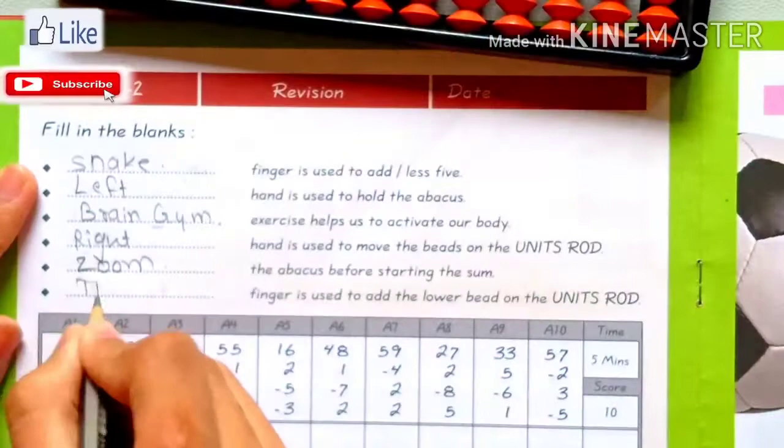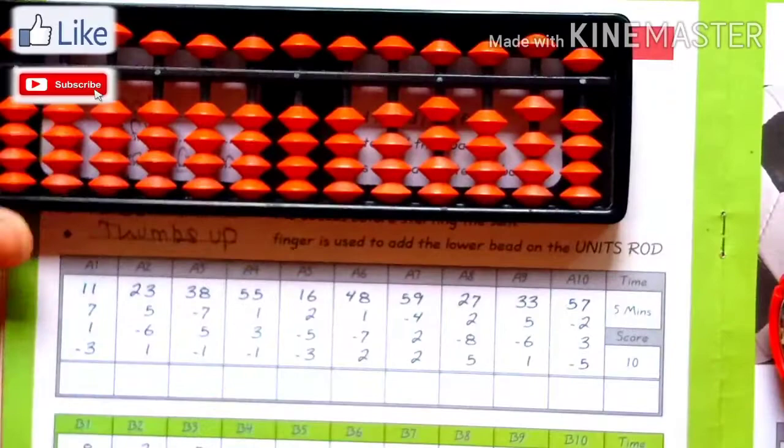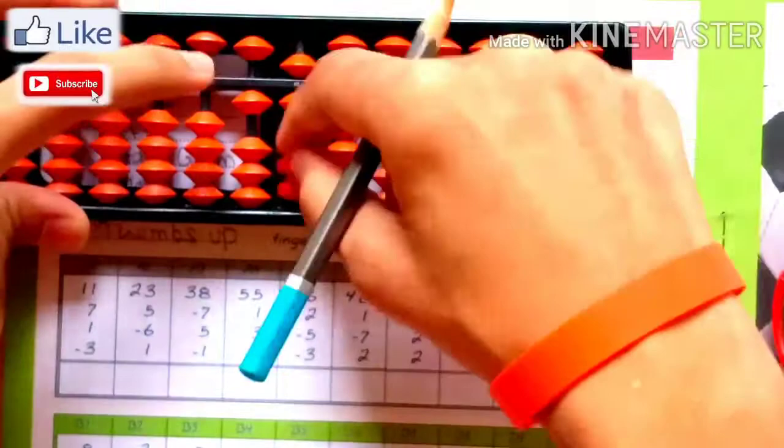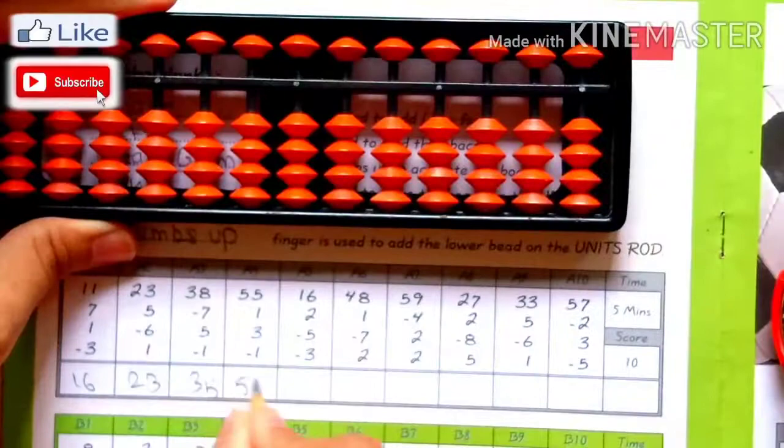Let's start our row. The timing is 5 minutes. We start: 1, 2, 3, 11, 7, 1, 3, 16, 23, 5, 6, plus 1, 23, 38, 7, 5, minus 1, 35, 55, plus 1, plus 3, minus 1, 58, 16, plus 2, minus 5, minus 3, 10.